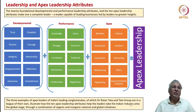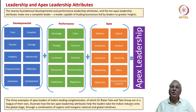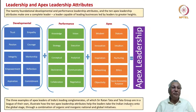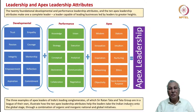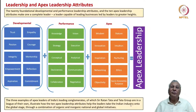Towards the end of this course, let us recapture what we have discussed. There are 20 foundational development and performance leadership attributes for any good leader. The 10 developmental characteristics are trust, empathy, passion, courage, integrity, mentorship, empowerment, reflection, aspiration, and commitment — qualitative factors that are felt in a leader. The 10 performance leadership criteria are knowledge, vision, strategy, execution, conceptual skills, analytical skills, decisiveness, communication, collaboration, and negotiation — highly performance-oriented attributes that set apart a high-performance leader. Developmental and performance capabilities reinforce each other in various combinations depending on firm-level and industry-level context.